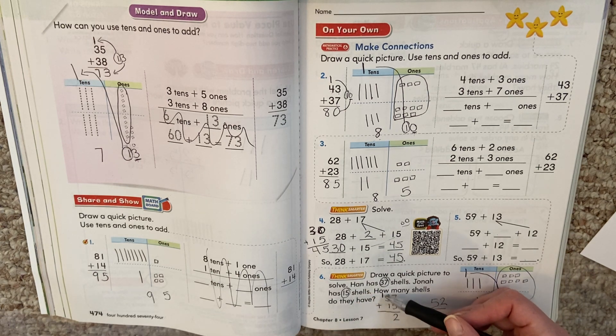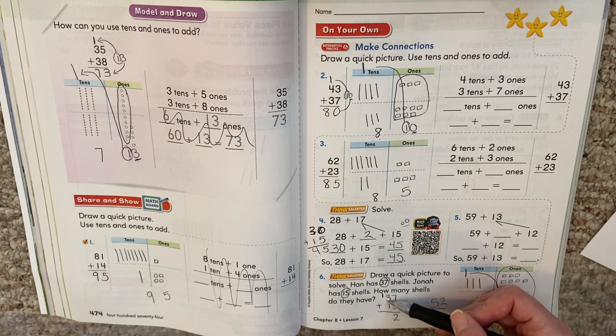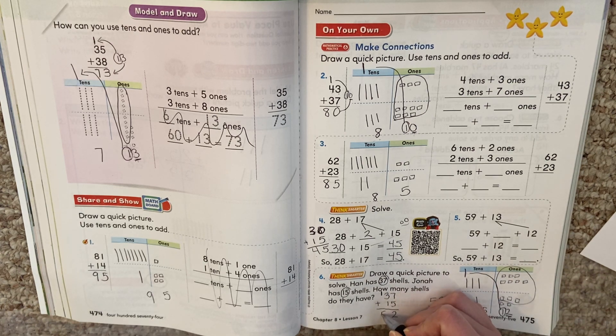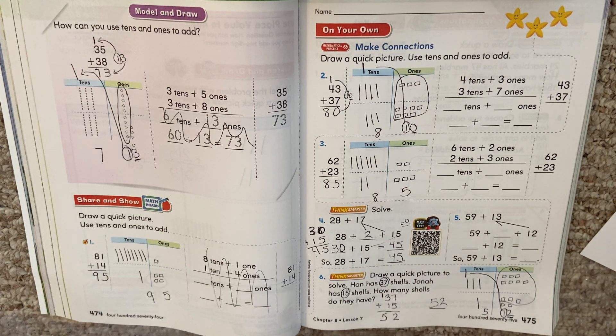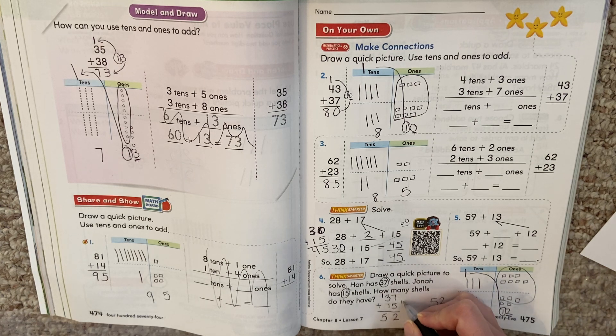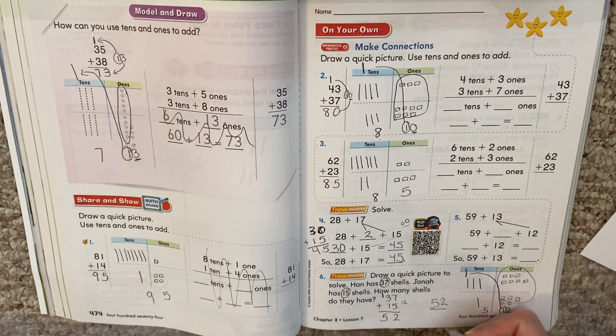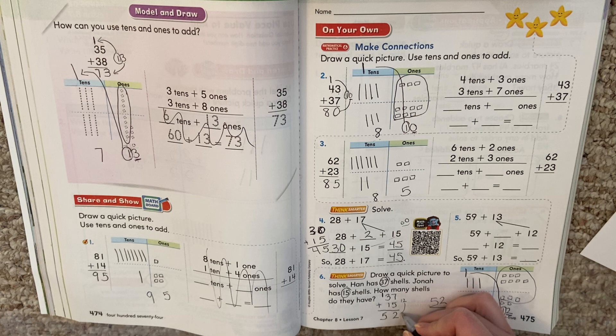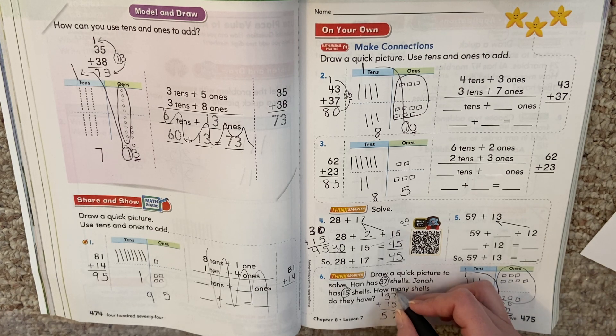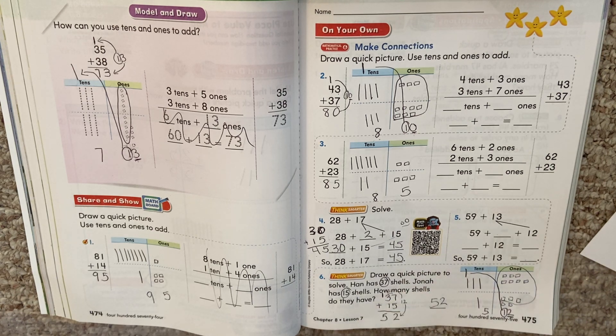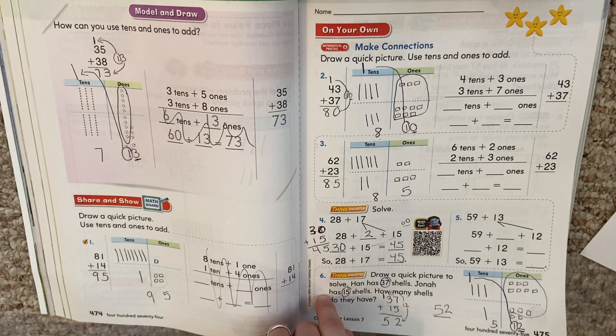Then I add all of these. 1 plus 3 is 4. 4 plus 1 more is 5. So I get the same answer. This is just without drawing my picture. Because I took my number 12 and I split it. I keep my 2 goes here. My 1 goes up there.